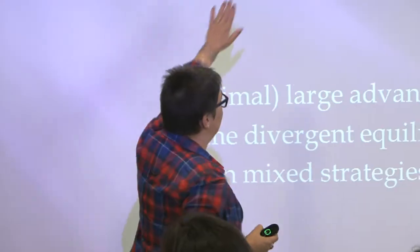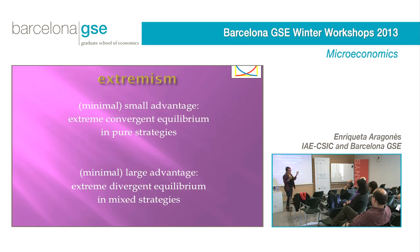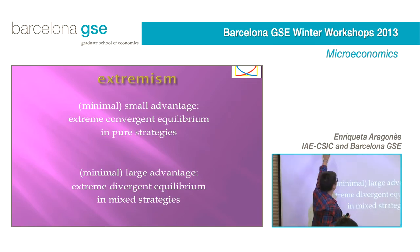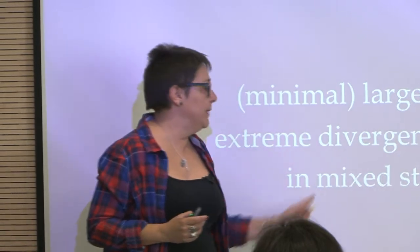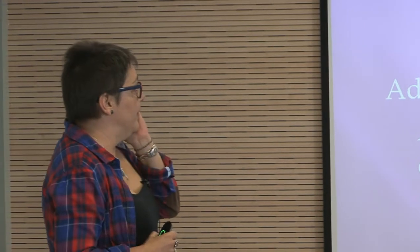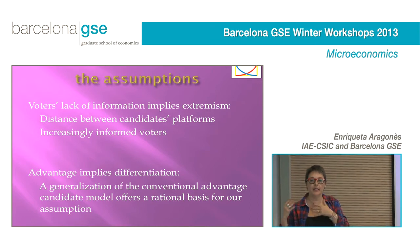The two kinds of results depend on whether the advantage is small or large. This advantage — the probability with which the indifferent voter votes for candidate A — is small if it's close to one-half, and large if it's close to one. When the advantage is small we have an extreme convergent equilibrium in pure strategies, while when the advantage is large we have an extreme divergent equilibrium in mixed strategies. The voters' lack of information implies the extremism we get in the results.